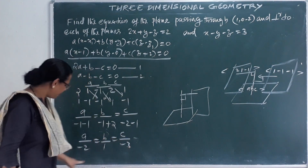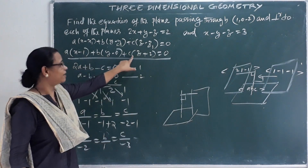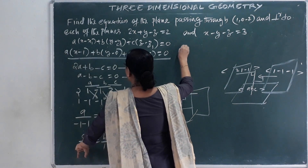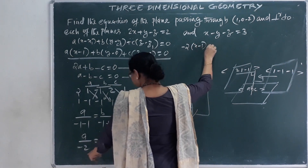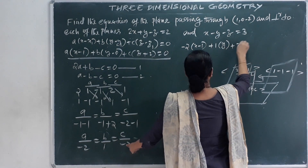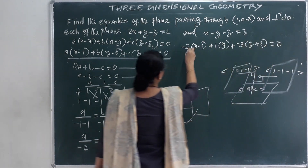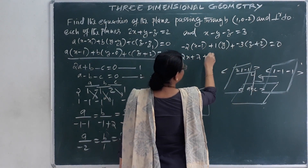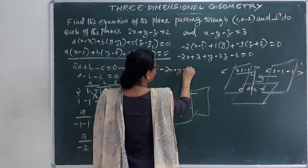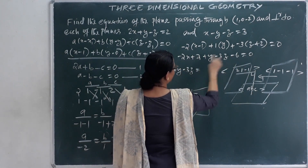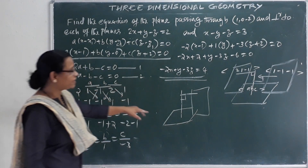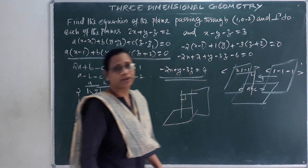So A equals -2, B equals 1, C equals -3, treating lambda equal to 1. Substituting into the plane equation: -2(x minus 1) plus 1(y minus 0) plus (-3)(z plus 2) equal to 0. Expanding: -2x plus 2 plus y minus 3z minus 6 equal to 0, giving -2x plus y minus 3z minus 4 equal to 0, which is our plane equation.